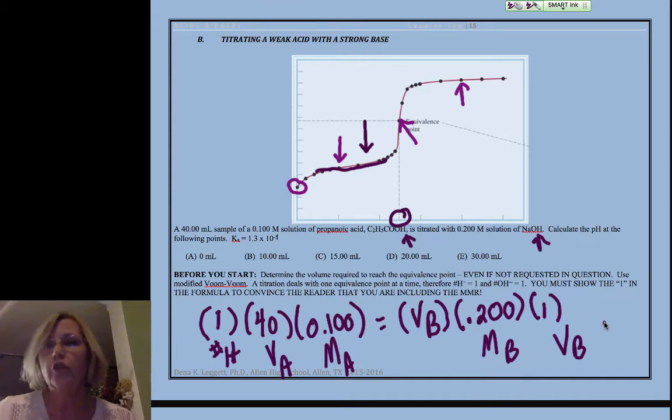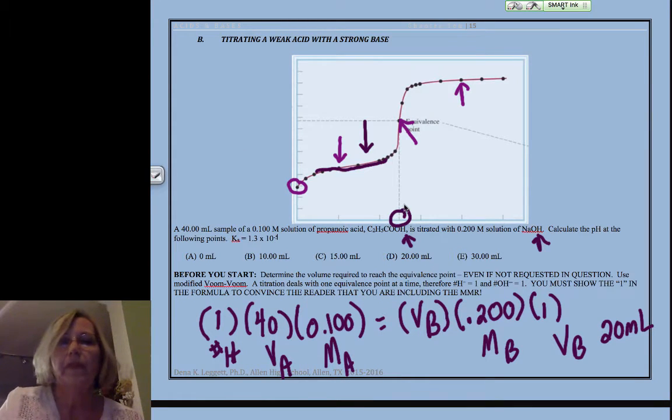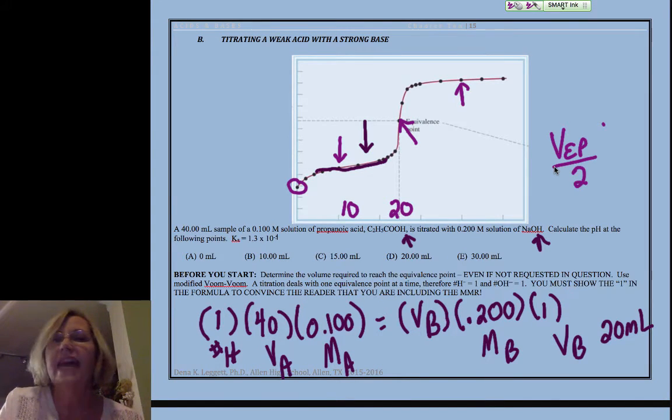So this point right here at 20 milliliters is the equivalence point, an important point along the way. Halfway there is the half equivalence point, which I'll call volume of the equivalence point over 2.